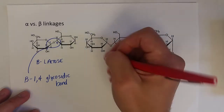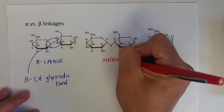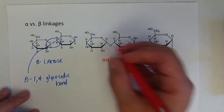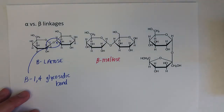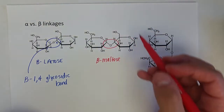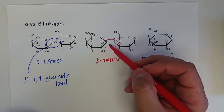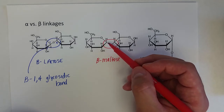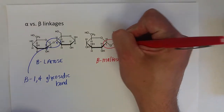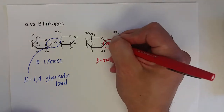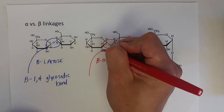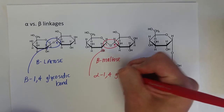For maltose, the anomeric carbon has a hydroxyl group in the up position, so this is also beta maltose. However, the glycosidic bond here was formed from the alpha glucose, linking to the fourth carbon on the other glucose molecule. Since it comes from the alpha hydroxyl group, we call this the alpha-1,4 glycosidic bond.